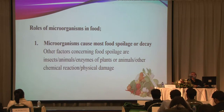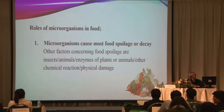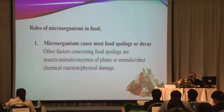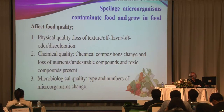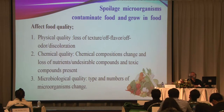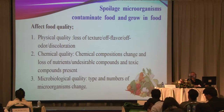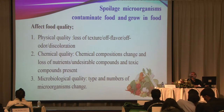The role of microorganisms in food: microorganisms cause most food spoilage or decay. Factors concerning food spoilage include insects, animals, enzymes of plants or animals, chemical reactions, and physical damage. Spoilage microorganisms contaminate food and grow in it. They affect food quality as follows: first, physical quality — if microorganisms grow in food, loss of texture, flavor, and odor will occur.